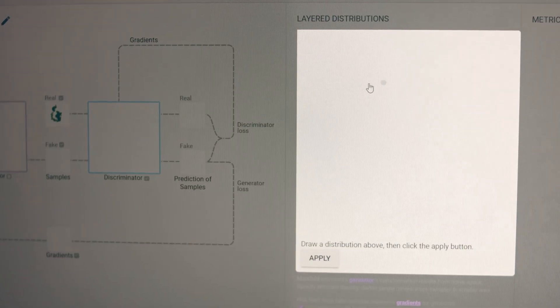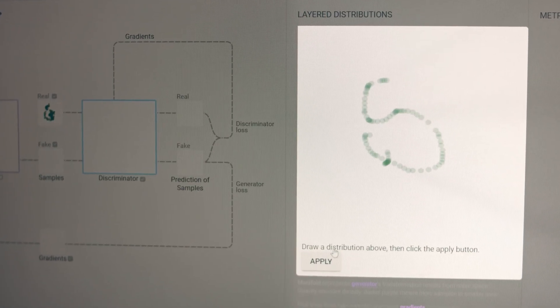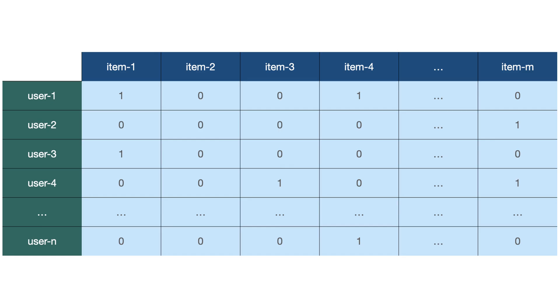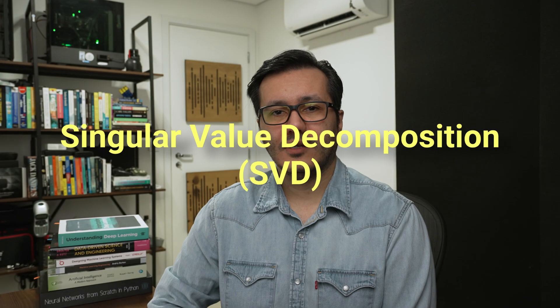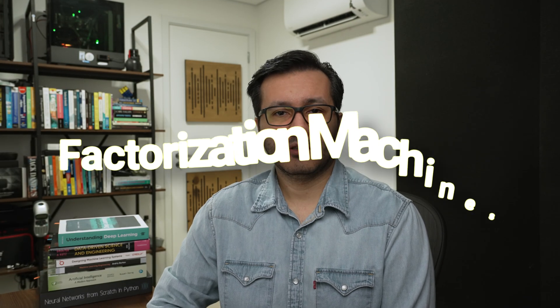The traditional way to build a collaborative filtering engine is to train some kind of model that converts the sparse matrix of user-to-item relations into a compressed, dense representation of user and item vectors. Some of the most commonly referenced algorithms to do that are SVD (singular value decomposition), factorization machines, etc.